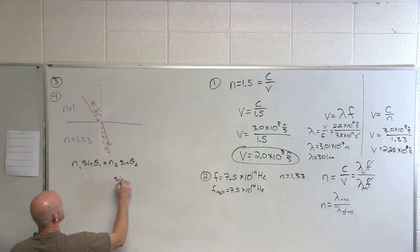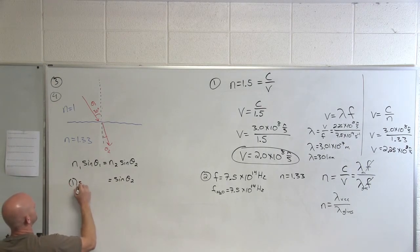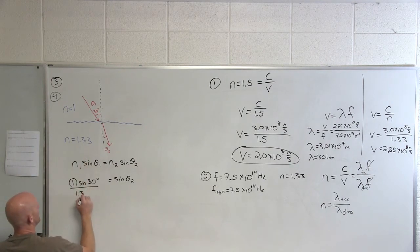So in this case, we could say that sine of theta two equals n one, one, sine of 30 degrees all over n two, one point three three.